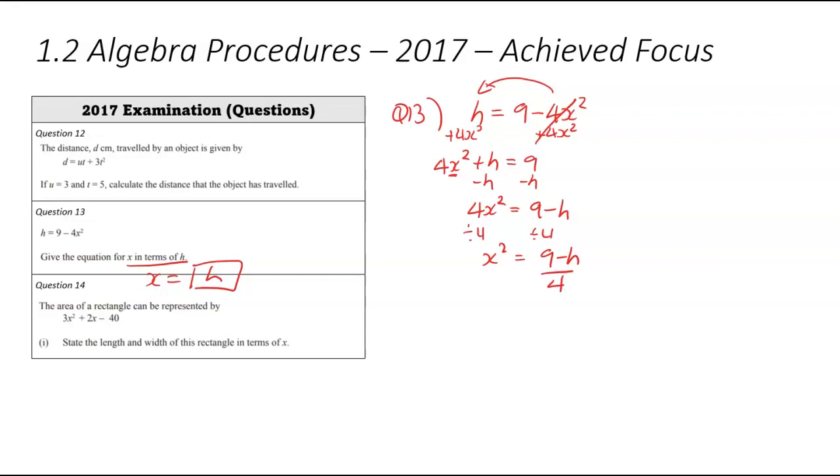And then finally, we can get rid of that square. Opposite of square is a square root. So that means I'm going to be square rooting both sides. The square root and the square cancel each other out, leaving us with x. And then the answer is plus or minus 9 minus h over 4.